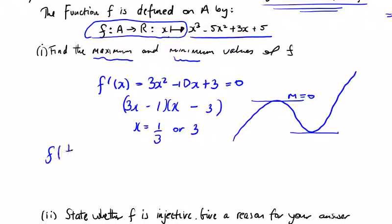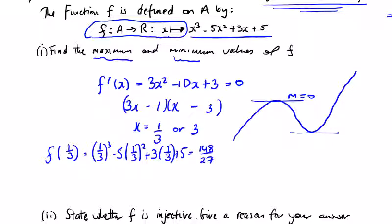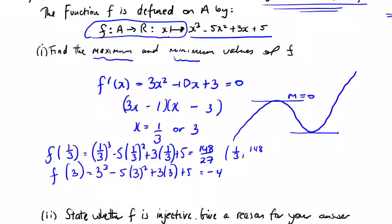Plugging back in: f(1/3) = (1/3)³ − 5(1/3)² + 3(1/3) + 5 = 148/27. And f(3) = 3³ − 5(3²) + 3(3) + 5 = −4. So the point (1/3, 148/27) is the maximum and (3, −4) is the minimum, since −4 is the lower y-value.